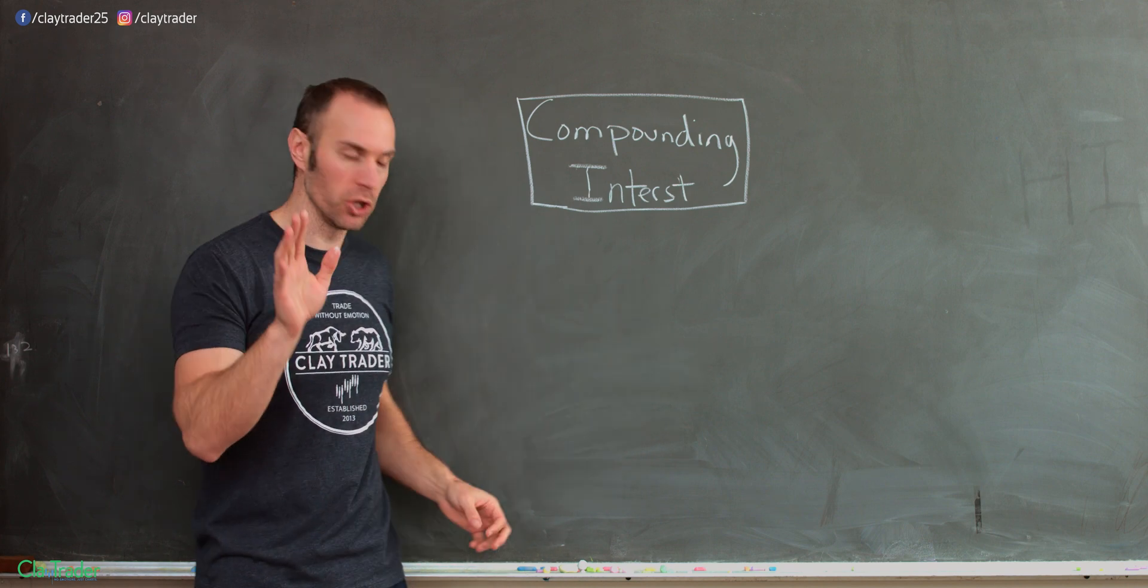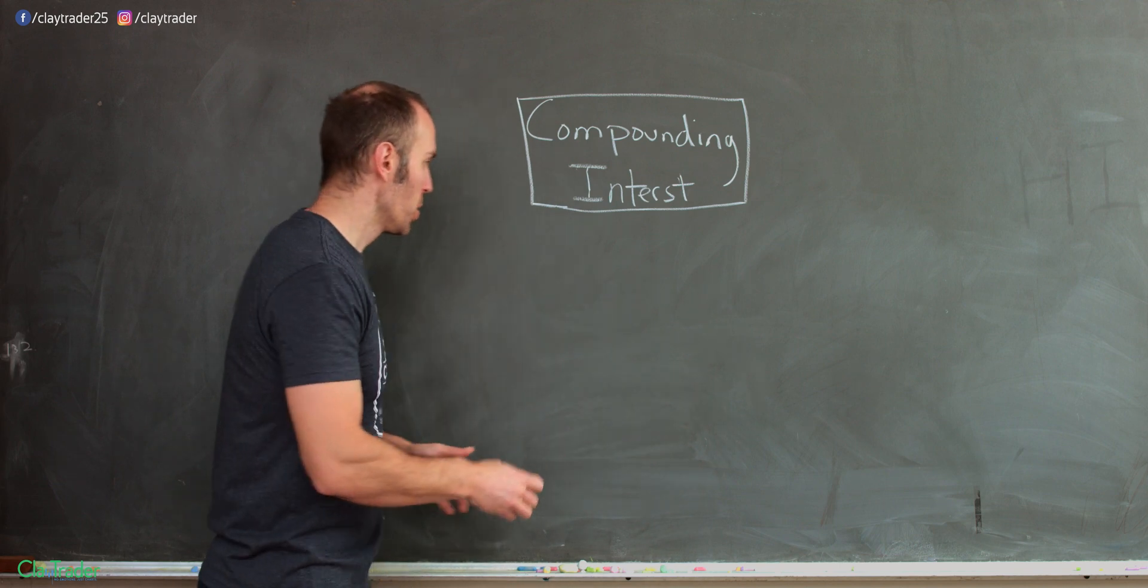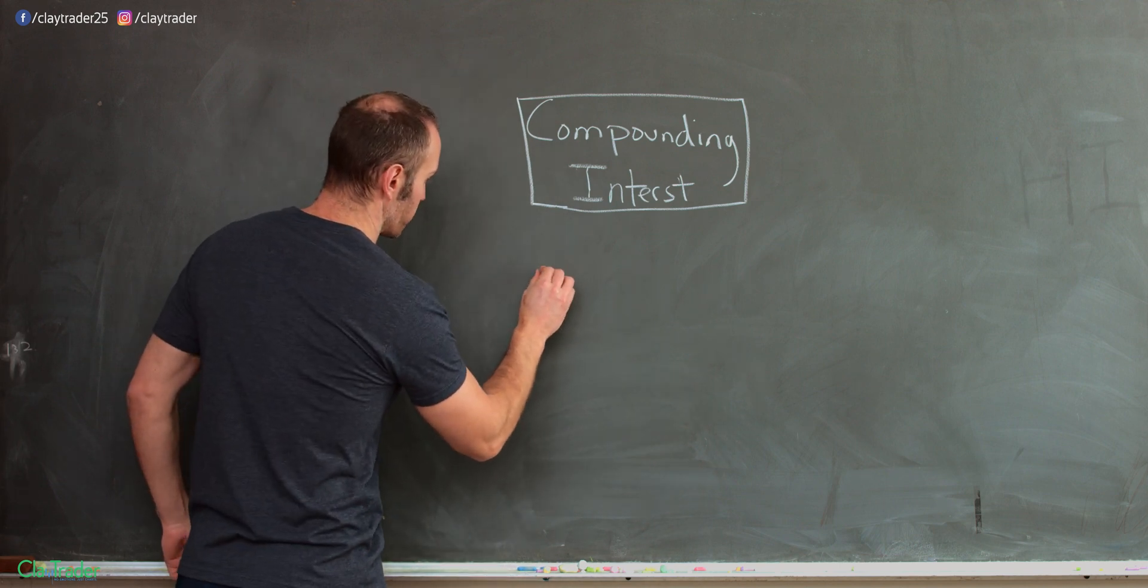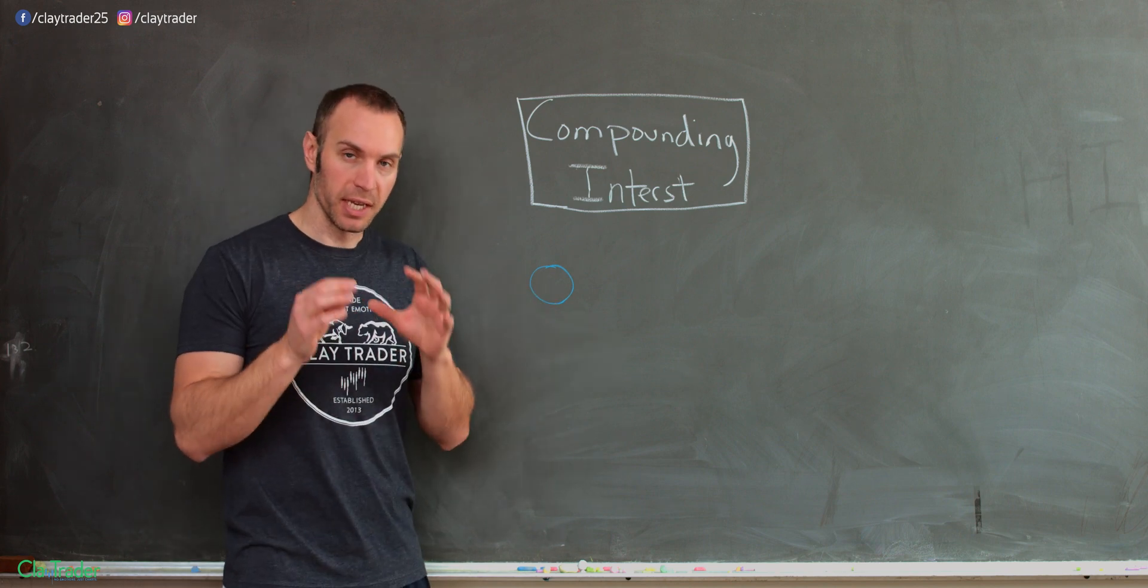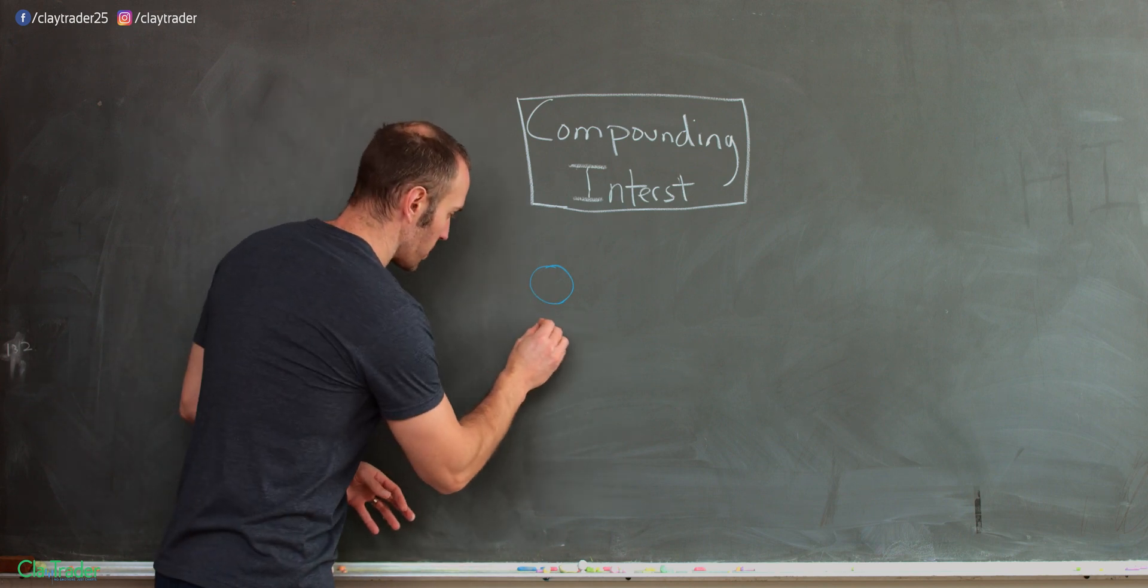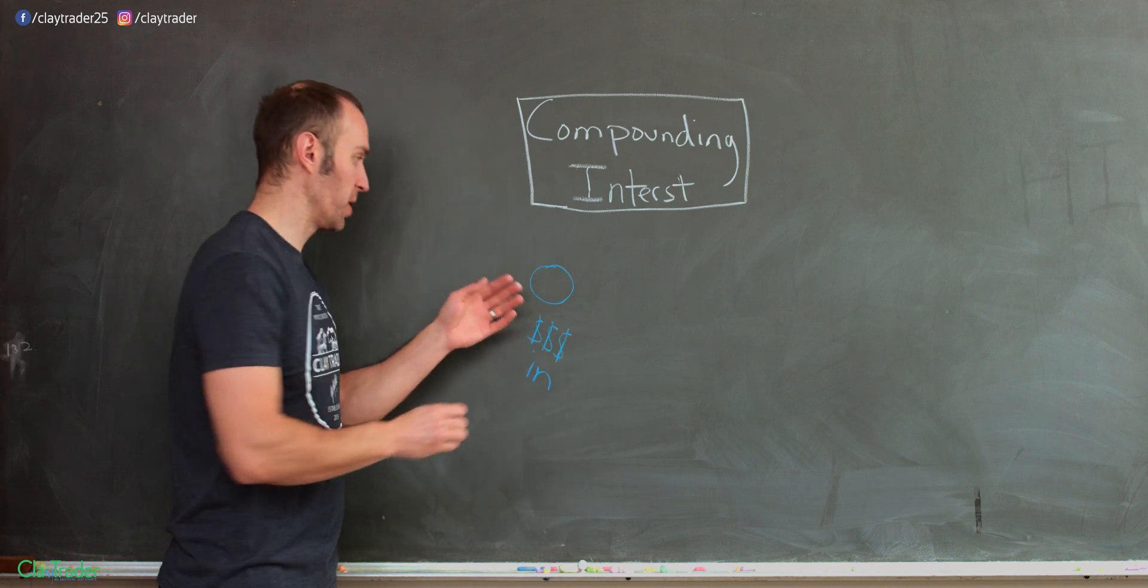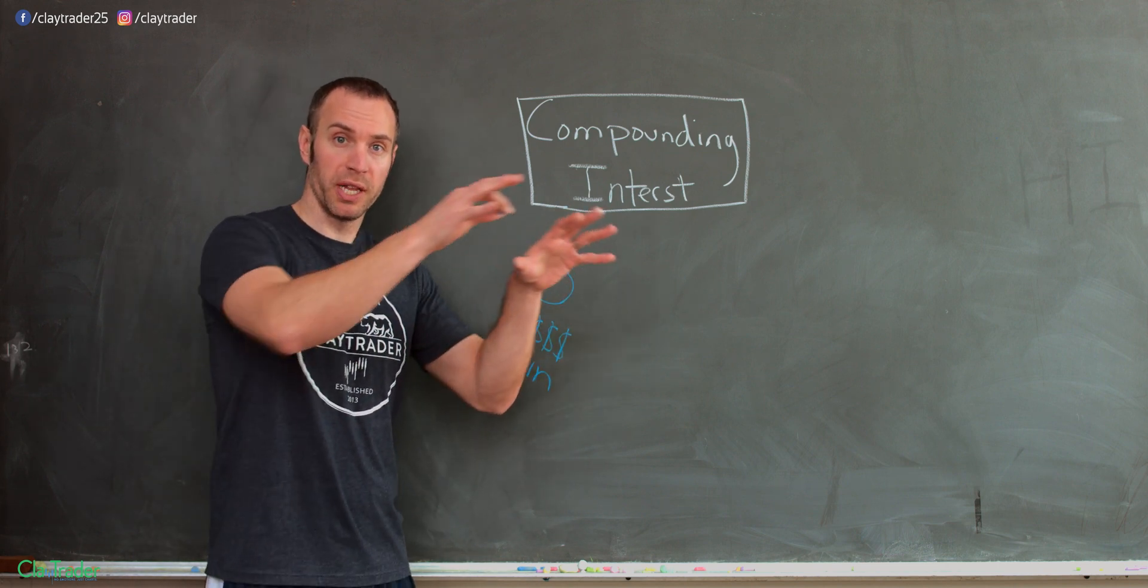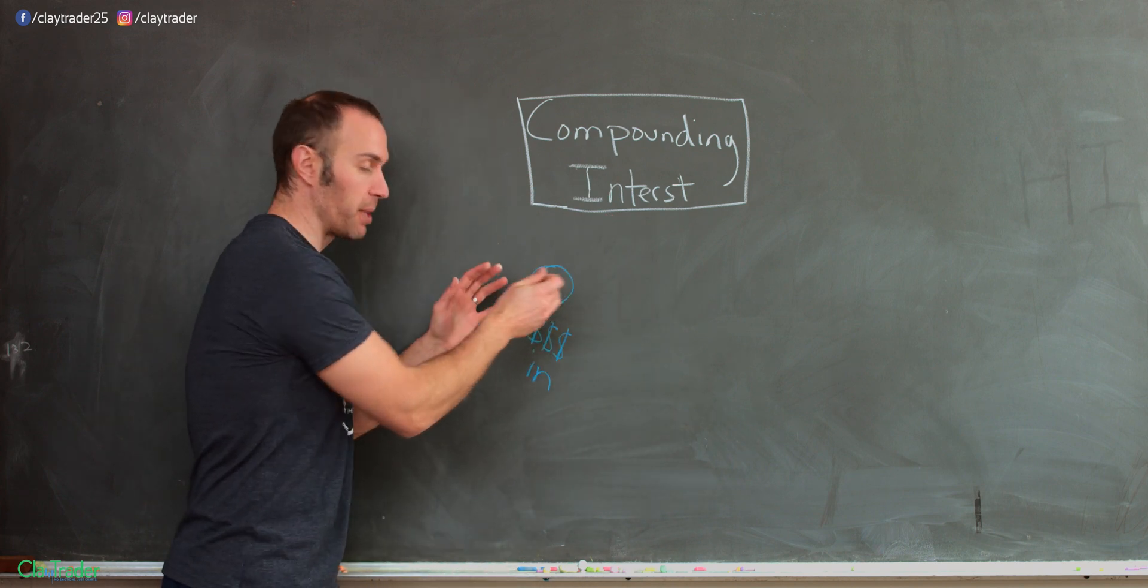So compounding interest, the way we look at it is this, and this is something we all know: shapes, right? So you're going to have some sort of shape right here. Now, the size of this shape is dependent on the amount of money that is put in.